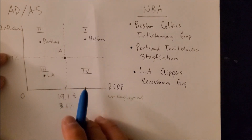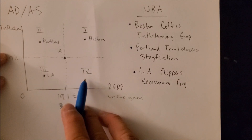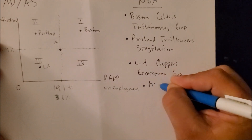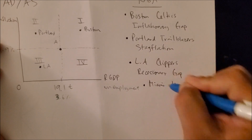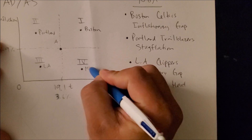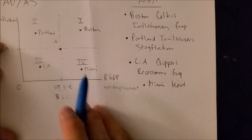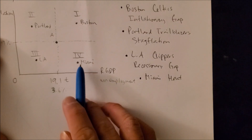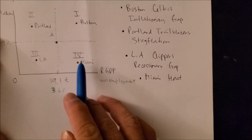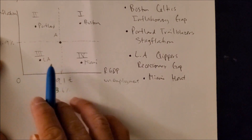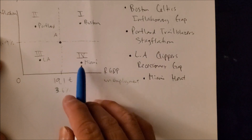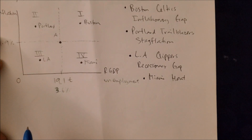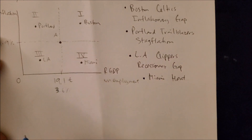The last region is quadrant four, the southeast region — we can call this point Miami, the Miami Heat. At point Miami, GDP on the x-axis is high, unemployment is low, and inflation on the y-axis is also low. At point Miami we have all three variables where we want them: high growth, low unemployment, and low inflation. This is the ideal region to be in.